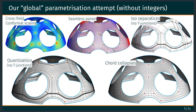From this, we can extract a quad layout by taking the ISO values in the parametrization. Because our separatrices go all the way and there are no injunctions, we can extract a full quad mesh directly, and improve it with chord collapse to have a final quad mesh.